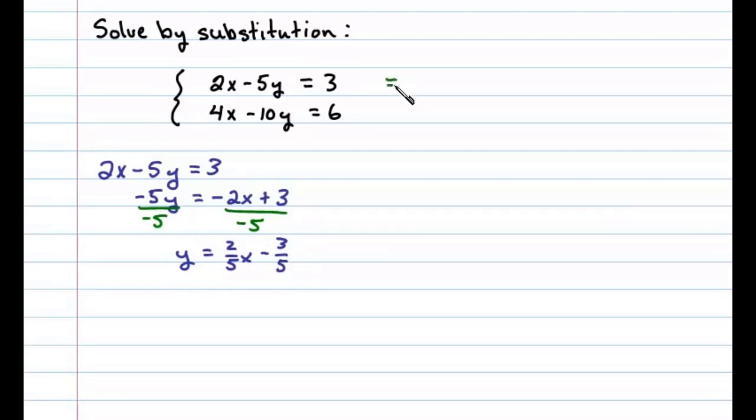So the first equation is equivalent to that, and what we'll do is replace y in the second equation with this expression. In other words, we have 4x minus 10 times y equals 6, in which we'll substitute two-fifths x minus three-fifths.